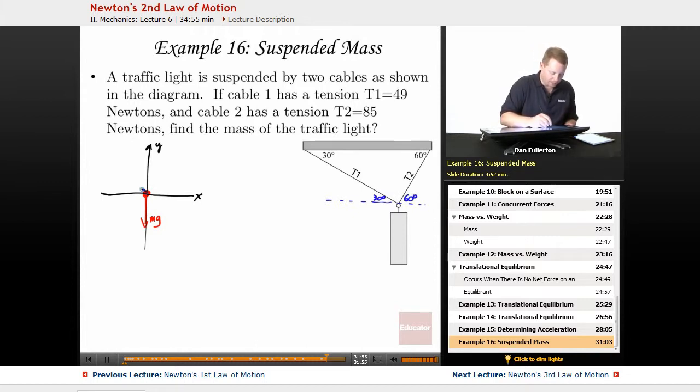So I'm going to draw T1 in that direction at an angle of 30 degrees, and T2 over here at a bigger angle, at 60 degrees. So my pseudo free body diagram - I've got to break up T1 and T2 into their components.